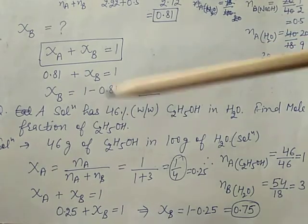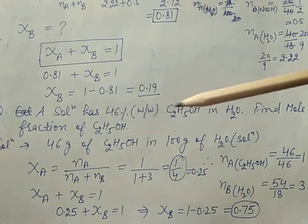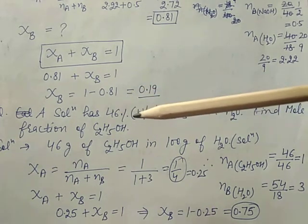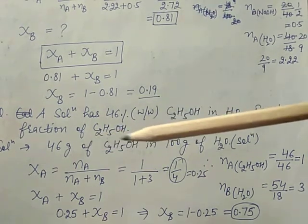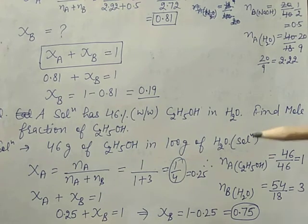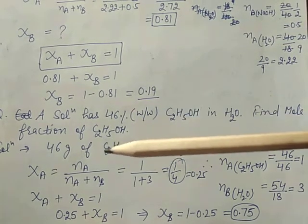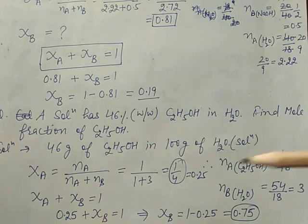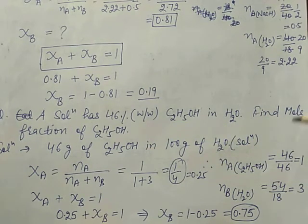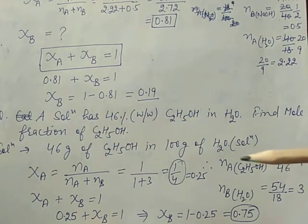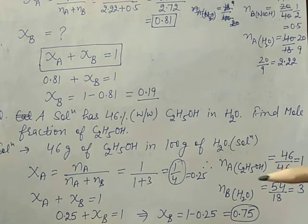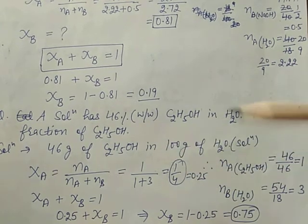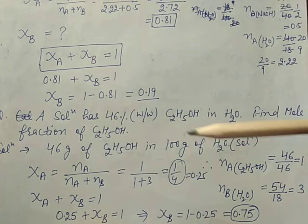Next question: a solution has 46 percent weight by weight ethanol in water — calculate the mole fraction of ethanol. 46 percent weight by weight means 46 gram of ethanol in 100 gram of solution. Mass is given so first calculate number of moles. Moles of ethanol = given mass 46 divided by molar mass 46 = 1. So number of moles of ethanol is 1.